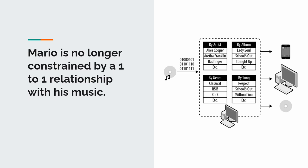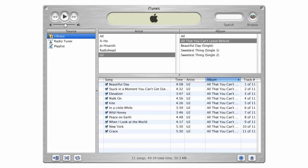The music ripped to his iMac would sound just as good as his CDs, but once on his computer he could listen to it in any way he pleased. He could make copies, share it with friends, organize it however he liked, and change that organizational system on the fly. He could make playlists and burn new albums to CDs. He was no longer constrained to that one-to-one relationship — and this was all made possible because of iTunes. Mario is no longer constrained by this one-to-one relationship, and iTunes afforded that ability.